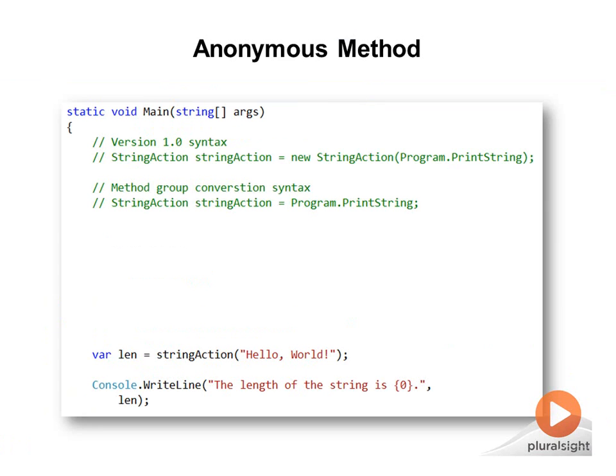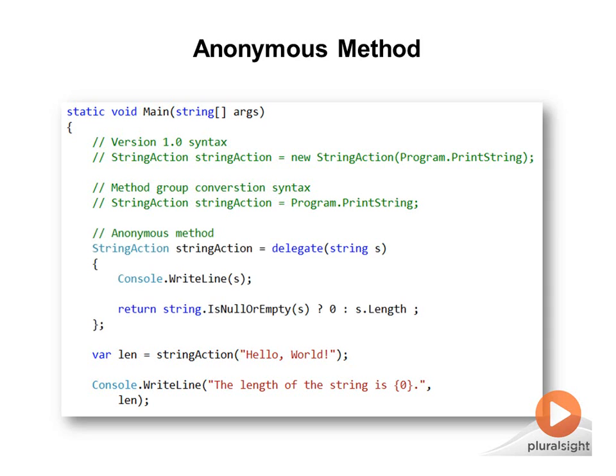To further simplify delegate creation, C# 2.0 also introduced anonymous methods. An anonymous method is just the body of a function without a name. Anonymous methods allow us to quickly assign a block of code to a delegate instance without giving that block of code a name. We may pass an anonymous block of code wherever a delegate instance is required — for example, in a simple assignment expression, as a return value of a function, or as an argument to a function. To assign an anonymous method to a delegate instance, simply replace the name of the method with the entire body of the method preceded by the keyword delegate.